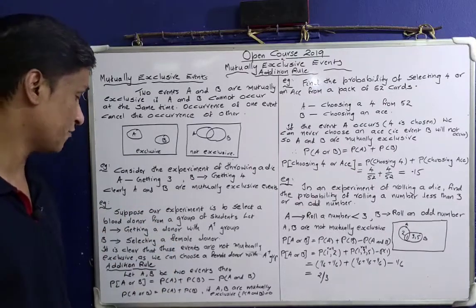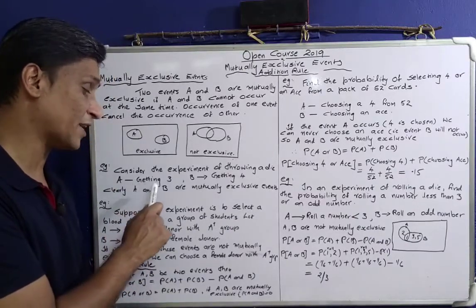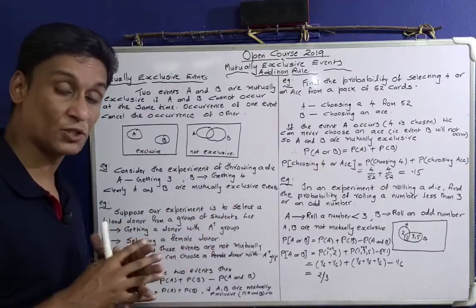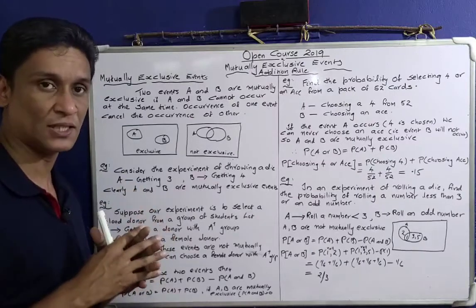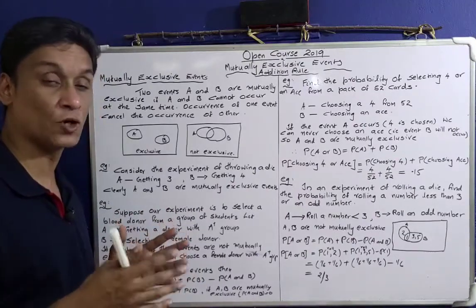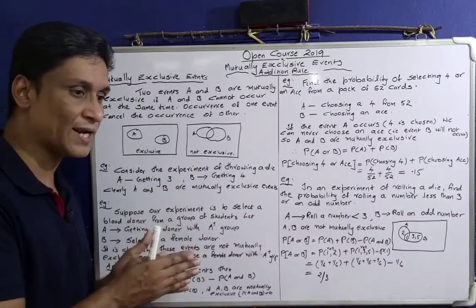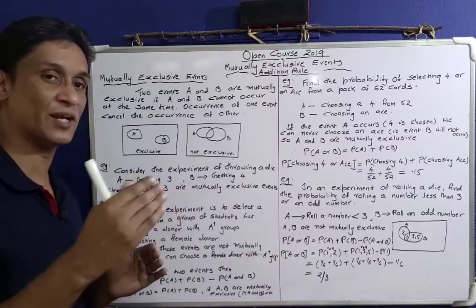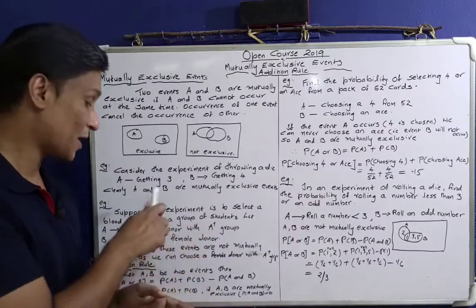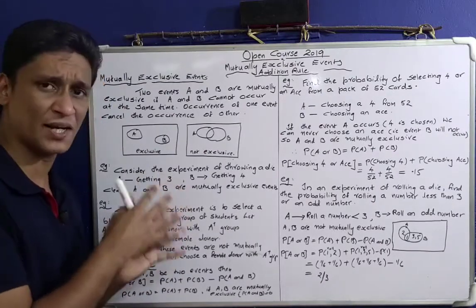Now consider the experiment of throwing a die. A is the event of getting 3, and B is the event of getting 4. We throw a die: 1, 2, 3, 4, 5, 6. If A is the event of getting 3 and B is the event of getting 4, then A and B are clearly mutually exclusive events — just like head and tail.